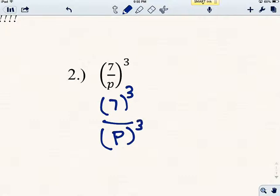And so we do 7 to the third power, which I'm going to go ahead and punch into my calculator real quick. 7 times 7 times 7. So that's going to be 343. And then down here on bottom, I've just got p to the third. Good.